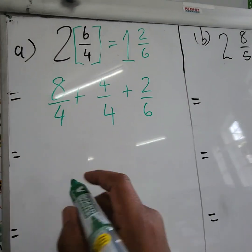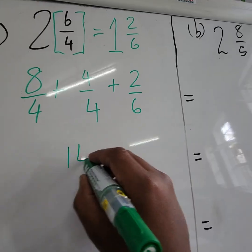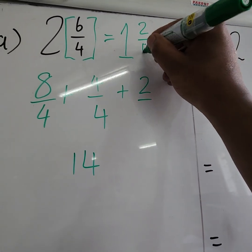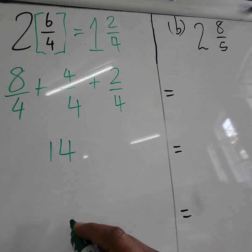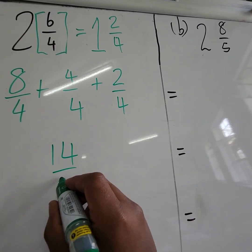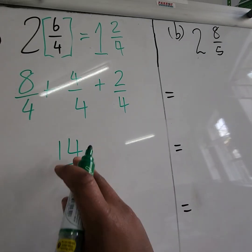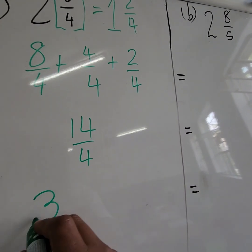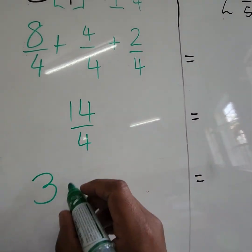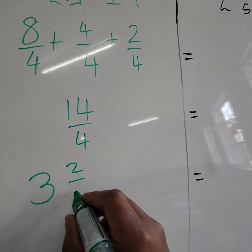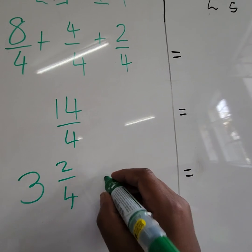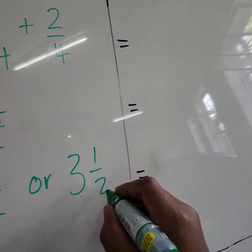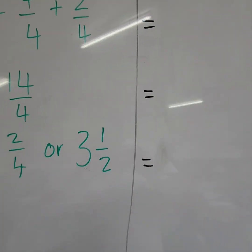Then when we add all three of these, we will get 14 over 4. And then four goes into 14 three times, and that is 12. And then 14 minus 12 is 2/4, or in simplest form, 3 and 1/2.